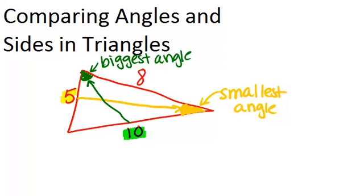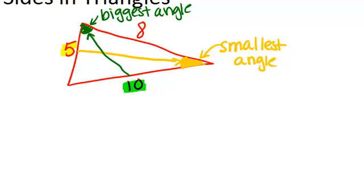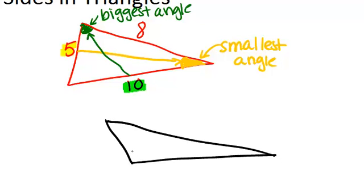Now keep in mind that the opposite of this is true as well. So if we had started with a triangle where we only knew the angles—we knew that this angle was 100 degrees, and this angle was 50 degrees, and this angle was 30 degrees—then we can order the sides of this triangle from smallest to biggest.